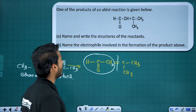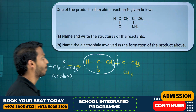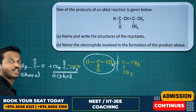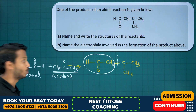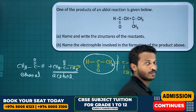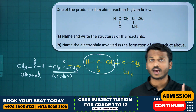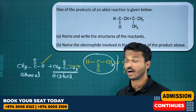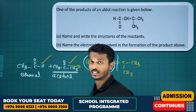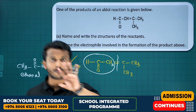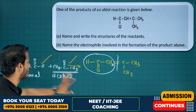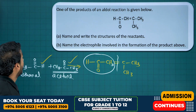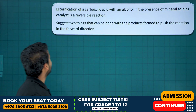Name the electrophile involved in the formation of the product. The electrophile will be the ketone part — the ketone part will act as the electrophile. In aldol condensation with aldehyde and ketone, the ketone will be the electrophile part. Then esterification.